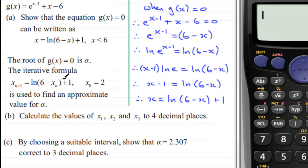And the iterative formula x with a subscript n plus 1 equals the natural log of 6 minus x with a subscript n plus 1, and our first approximation to the root x₀ equals 2. And this iterative formula is used to find an approximate value for that root α.